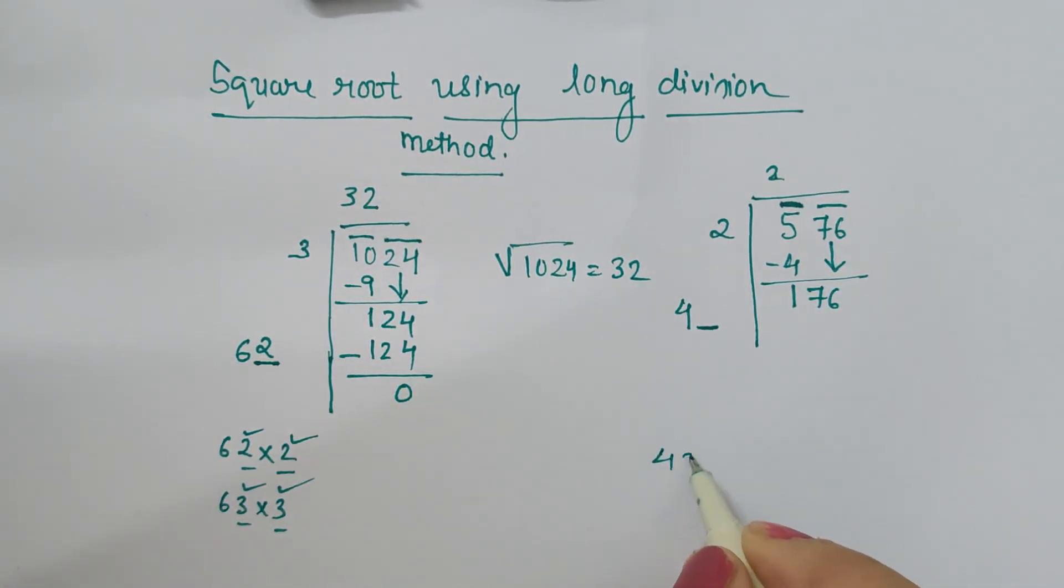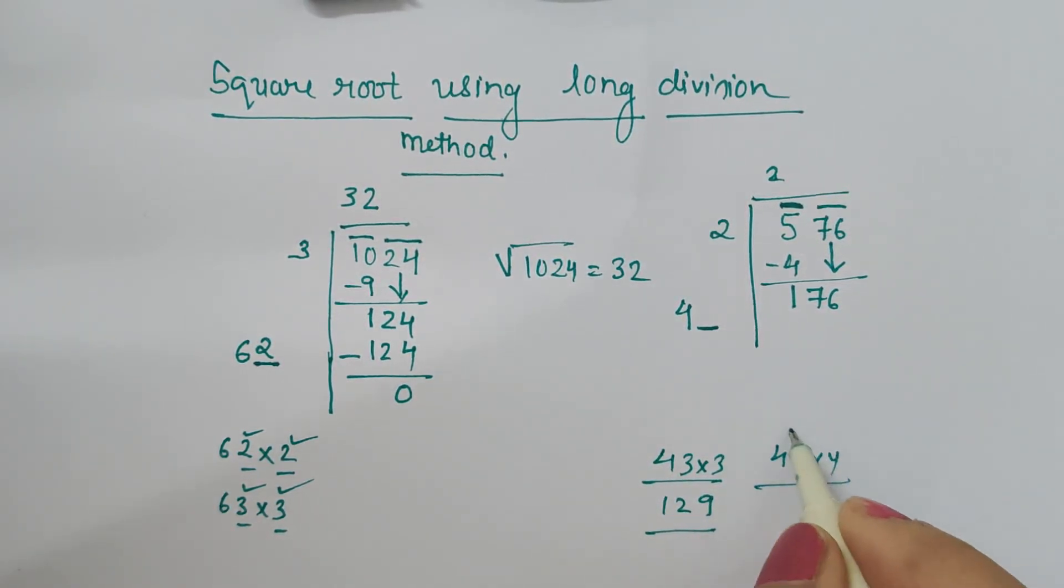Let's check: 43×3, which is 129, is less than this. 44×4: 4×4 is 16, 4×4 is 16, giving us 176.